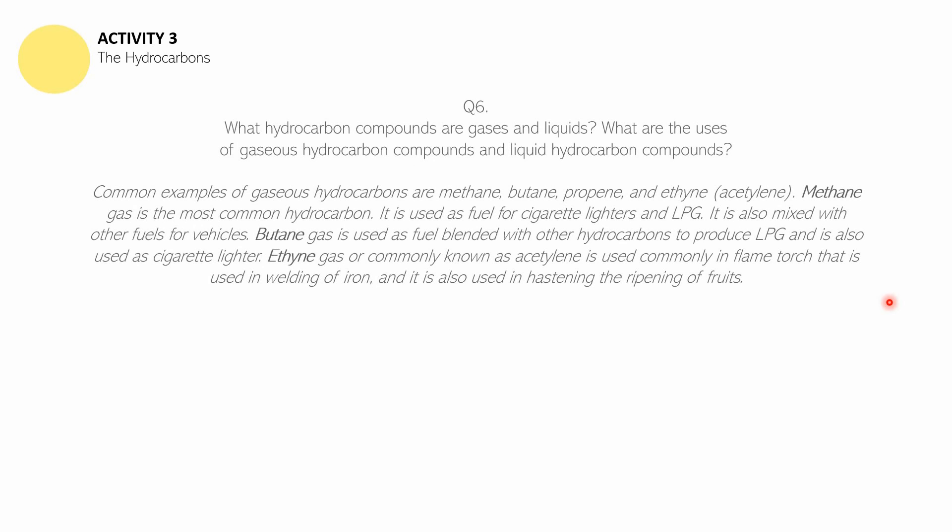The answer to the last question: Common examples of gaseous hydrocarbons are methane, butane, propene, and ethyne or acetylene. Methane gas is used as a fuel for cigarette lighters and LPG — though cigarette lighters are mostly fueled by butane. Butane is a gas used as a fuel blended with other hydrocarbons to produce LPG. Ethyne, commonly known as acetylene, is used in flame torches for welding iron and also in hastening the ripening of fruits.